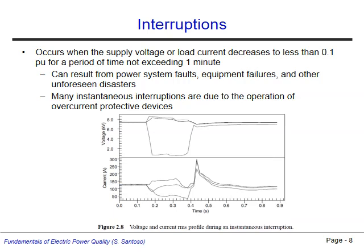Voltage interruptions occur when the RMS voltage magnitude falls to less than 10% of its nominal value. There are many possible causes of interruptions, such as faults on the power system or equipment failures. Most often, however, interruptions occur as a result of an overcurrent protective device operating. For example, if a circuit breaker is called upon to isolate a short circuit fault on the system, the opening of the circuit breaker will isolate any downstream customers from the power source, driving their voltage to zero while the breaker remains open. The figure shows an interruption occurring on one phase, lasting for about 0.2 seconds. Notice that the other two phases experience voltage swells during the event.